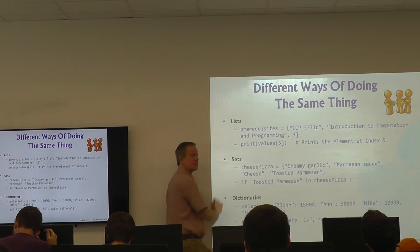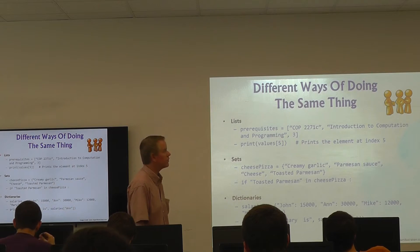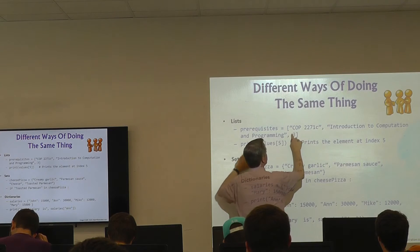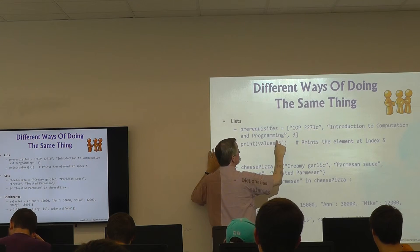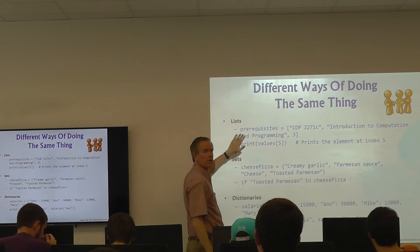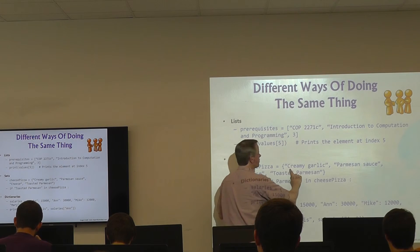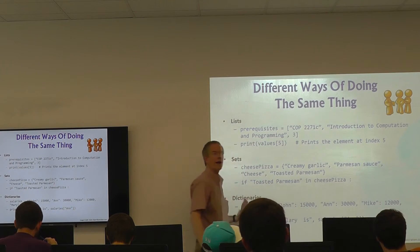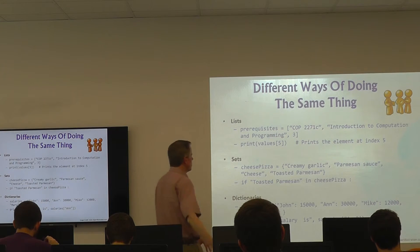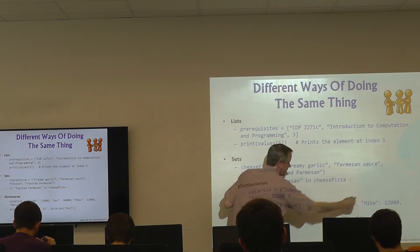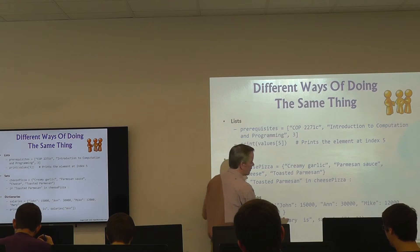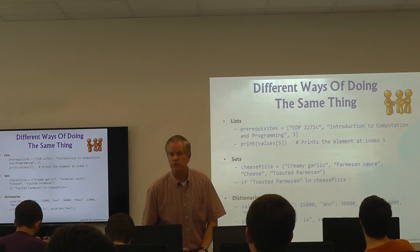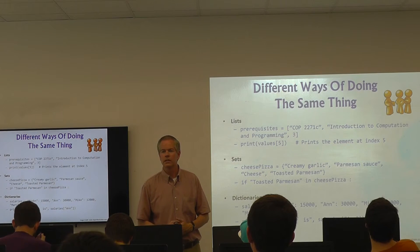Alright, this is the big one. You now have three types of containers — let's review. Lists: `prerequisites = ['CO2-20', 'CO2-21']`, you can access by index, like `values[5]`. Sets: `cheese_pizza = {'creamy garlic', 'parmesan sauce', 'cheese', 'toasted parmesan'}`, and you can check membership like `if 'toasted parmesan' in cheese_pizza`. And today, dictionaries: `salaries = {'John': 15000, 'Ann': 30000, 'Mike': 12000, 'Mary': 15000}` — `print('Ann salary is', salaries['Ann'])` prints $30,000.